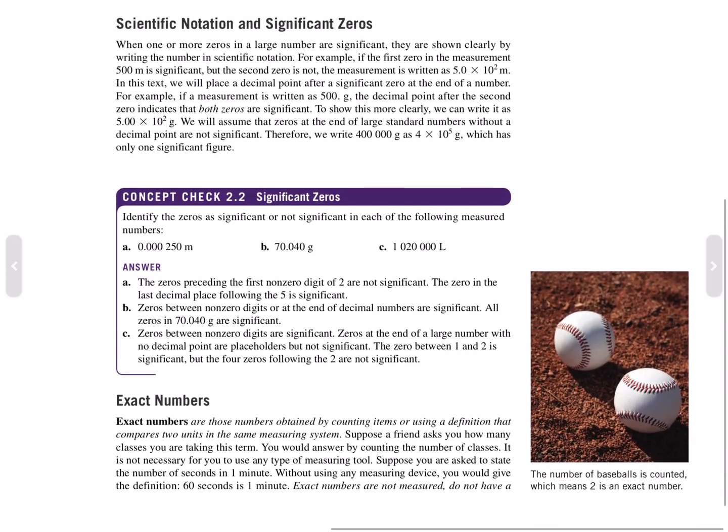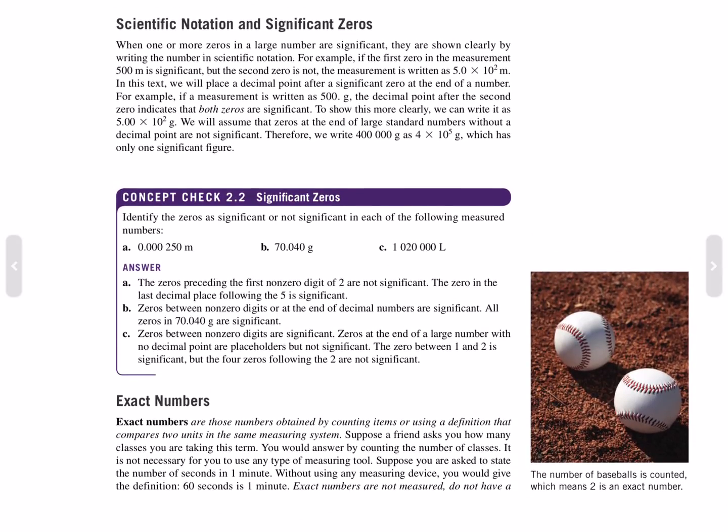Exact numbers. Exact numbers are those numbers obtained by counting items or by using a definition that compares two units in the same measuring system. Suppose a friend asks how many classes you are taking this term. You could answer the question by counting the number of classes. It is not necessary for you to use any type of measuring tool.